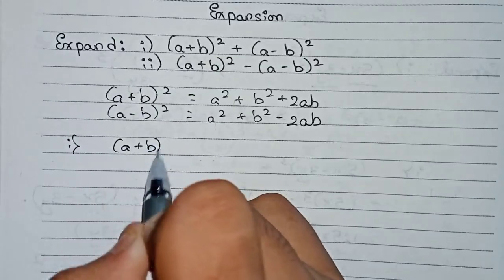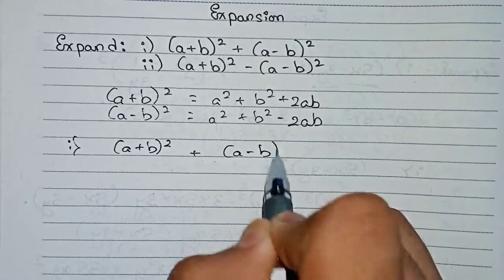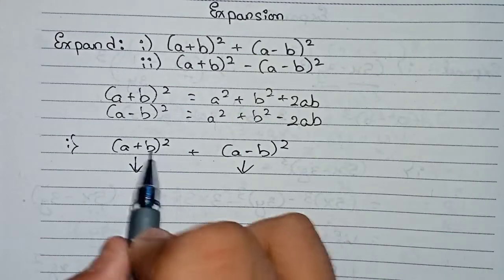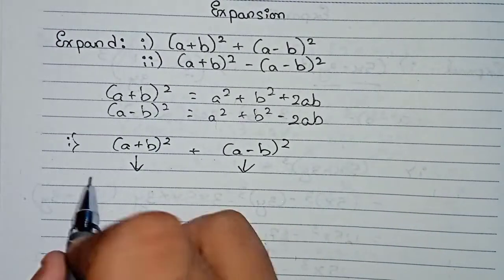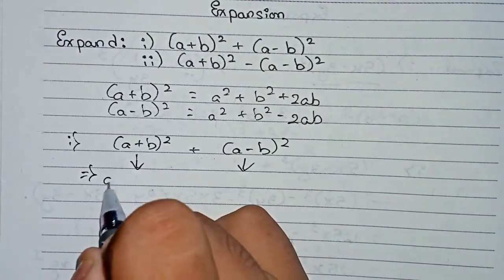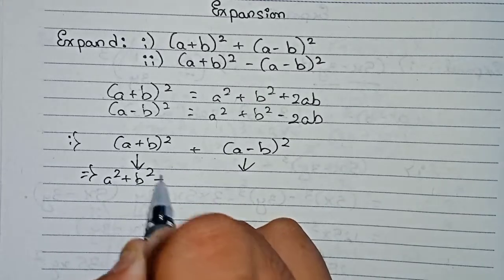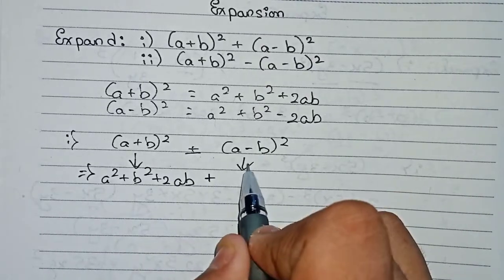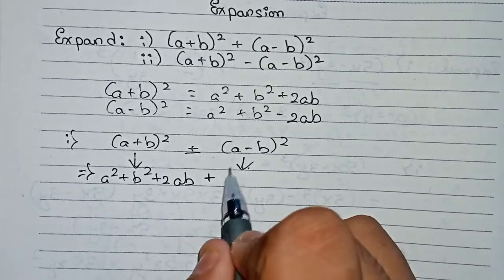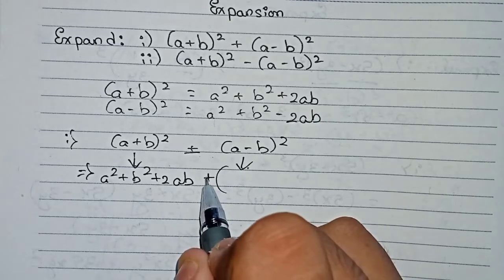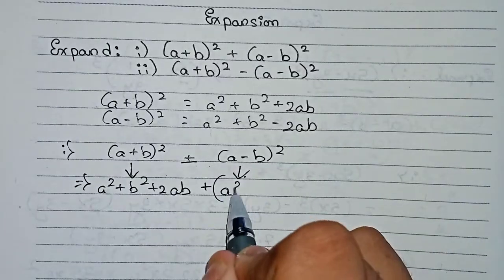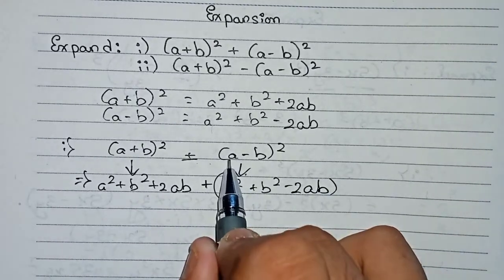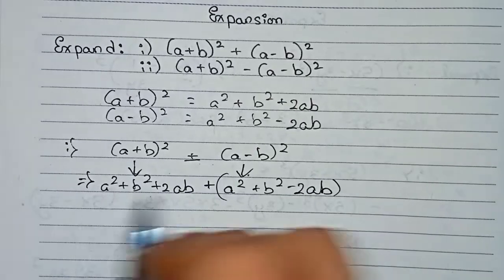Question one says (a + b)² + (a − b)². You have to do each portion separately. For (a + b)², using the first formula: a² + b² + 2ab. Between the two parts there is a plus sign. Then for (a − b)², the formula gives a² + b² − 2ab.